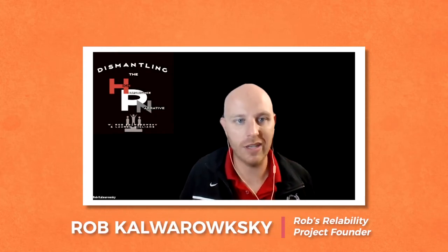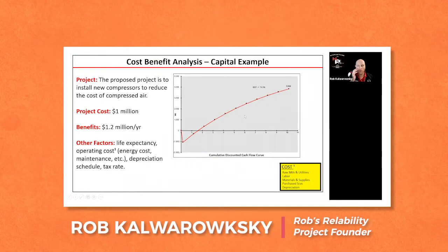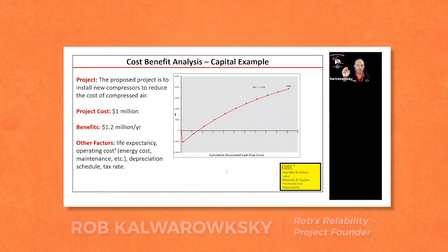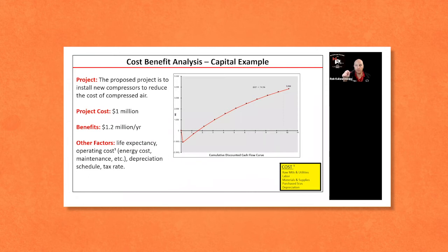So net present value and DCF are very similar. Typically, when you're looking at discounted cash flows, you're only analyzing what money goes in and what money goes out. So there's not really a place for things like risk, or things like future lost production, where net present value, you can absolutely throw those things in.